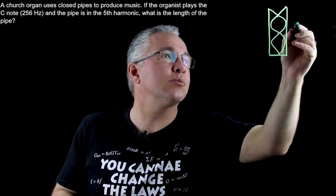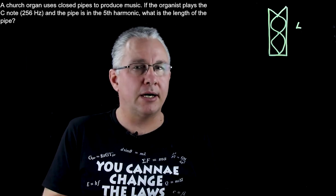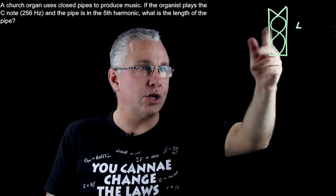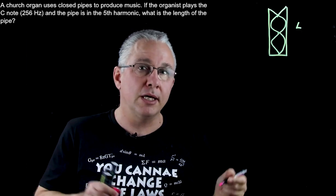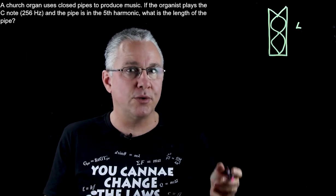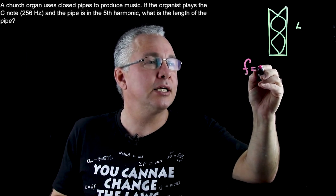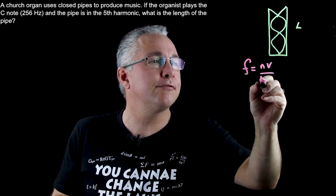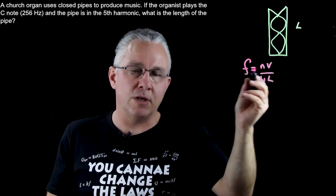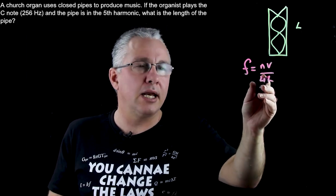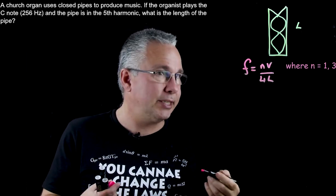Now we need to work out the length of this pipe. I can show you the quick form, but I'll give you the straight formula — check out my video on closed pipes for the full derivation. The formula is: frequency equals nV over 4L, where f is frequency, V is the velocity of sound, L is the length of the pipe, and n is the harmonic number.